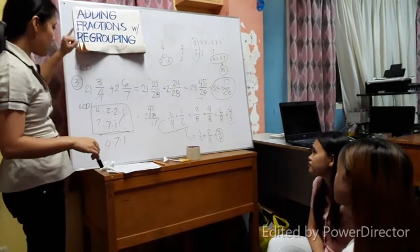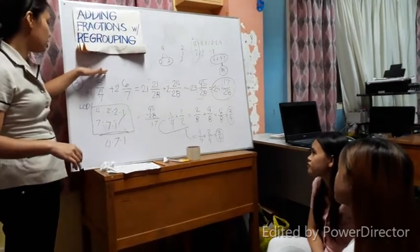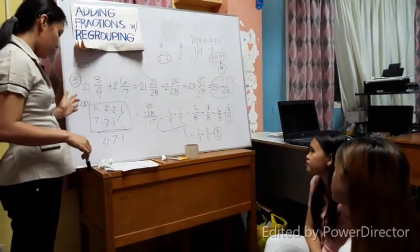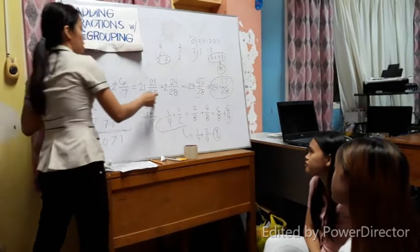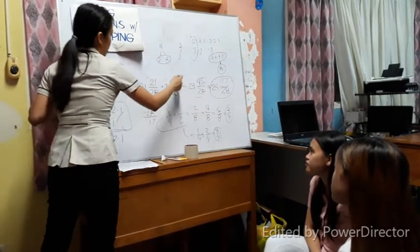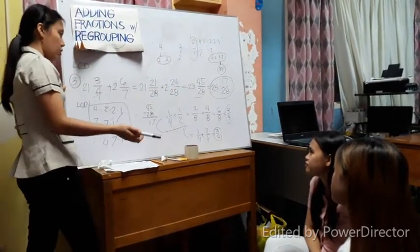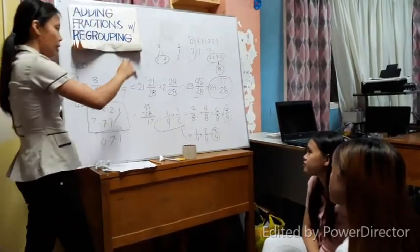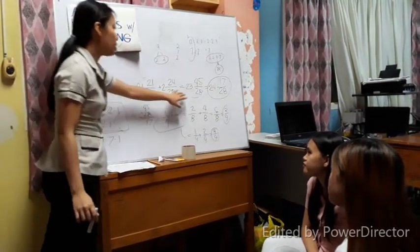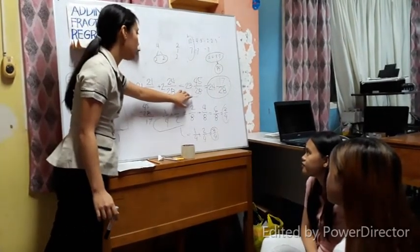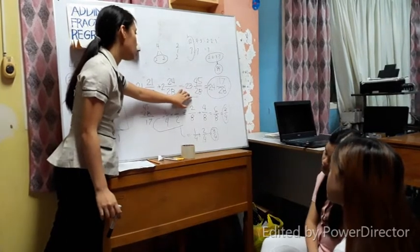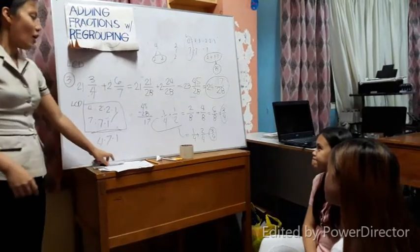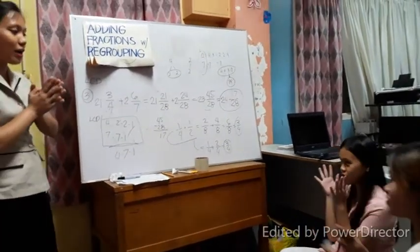To summarize: first, identify if it needs regrouping. If it does, find the LCD. Then transform into similar denominators. Once denominators are the same, add. Then check if the result is already a simplified fraction or still improper. If improper, convert it to a mixed number. Okay, let's give ourselves a Kalapati Clap, class!